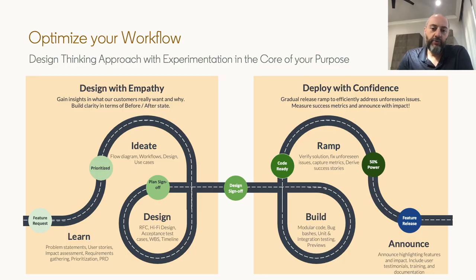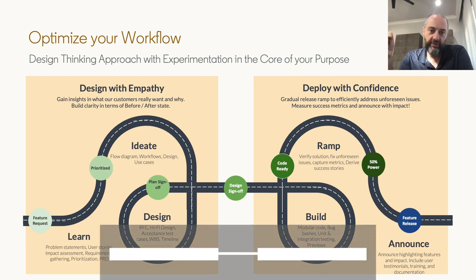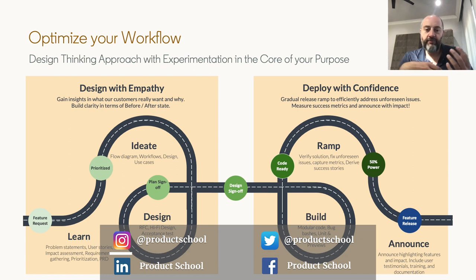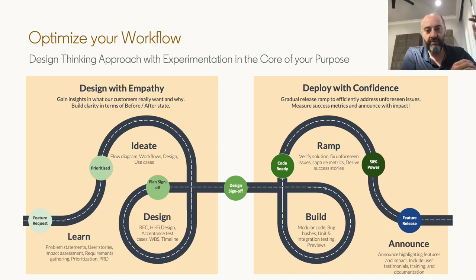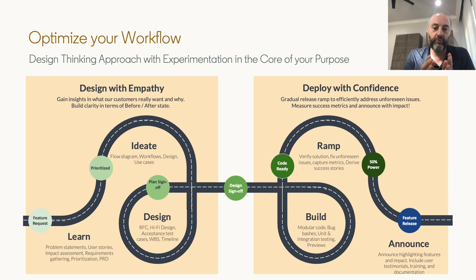Next, I'm going to talk about our workflow and how we've optimized it over the years. The idea is to apply a design thinking approach with experimentation at the core. Through the prioritization framework and backlog prioritization, we focus on doing the right work — the most important, high-impact work. Now that we've identified it, we need to do it right. That's the idea behind the workflow.